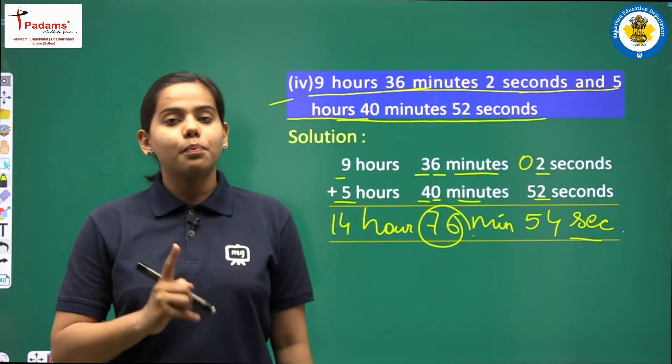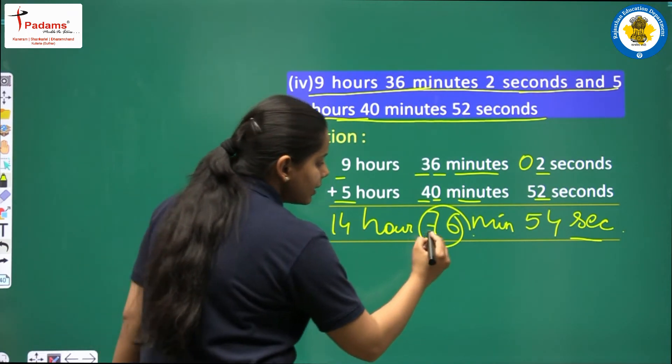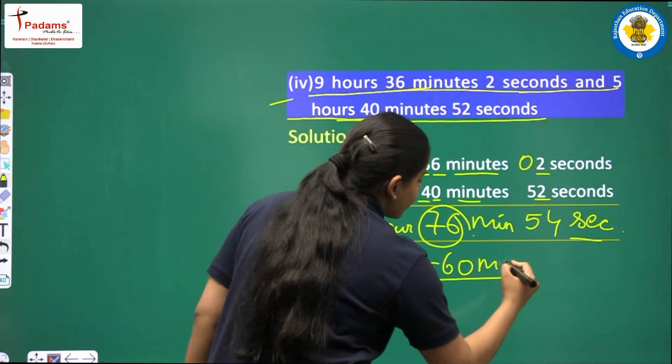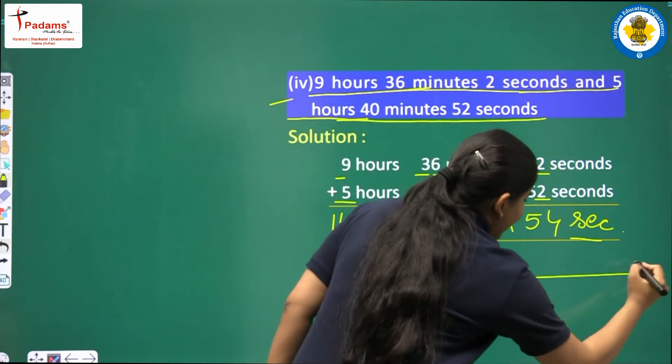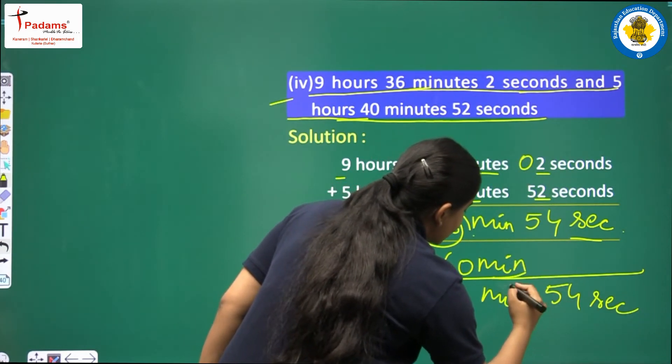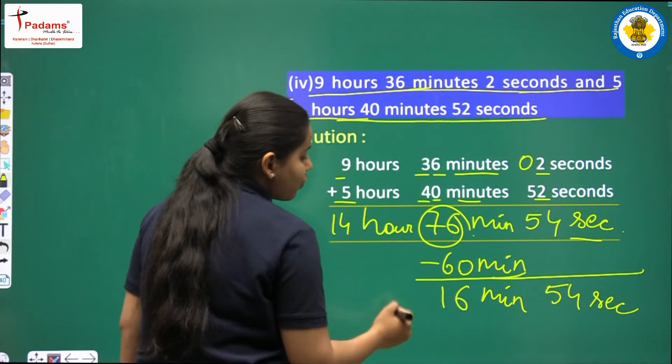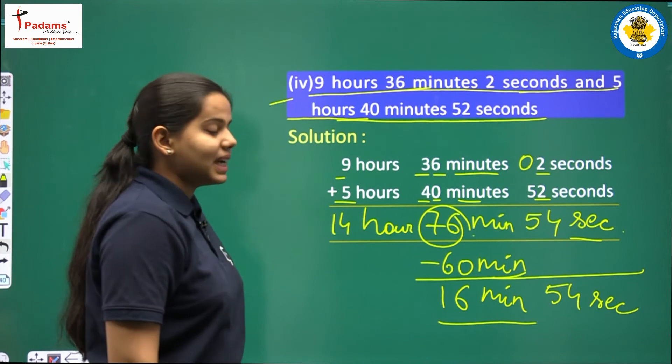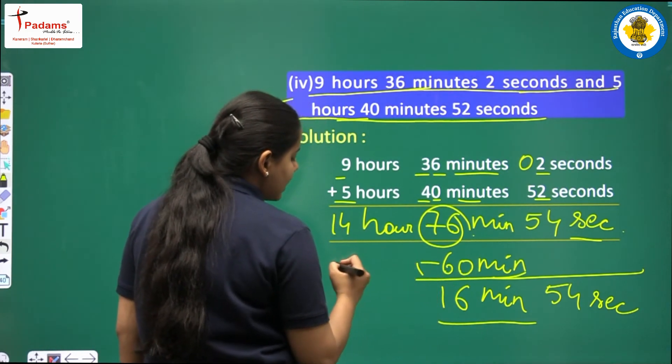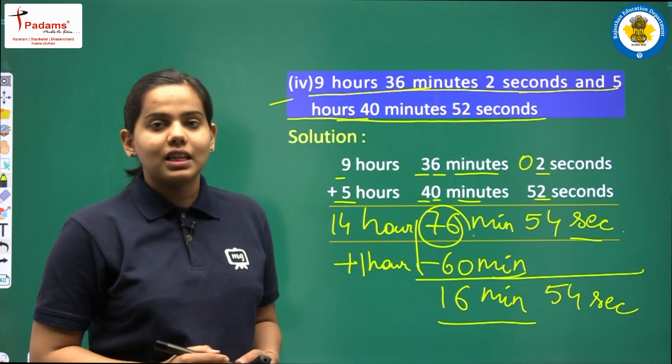So always remember for minutes and seconds, whenever it is more than 60 we will find the difference. See, we solve by the second method. From 76 you subtract 60. See, the seconds answer will remain the same, that is 54 seconds. Here when the minutes answer comes, this difference will come. 6 minus 0 is 6. 7 minus 6 is 1. Now the answer for minutes is 16 minutes. Here the 60 minutes we subtracted will go to hours and become plus 1 hour. Because 1 hour is equal to 60 minutes.